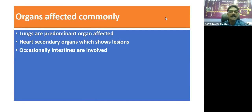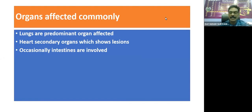While doing post-mortems, most of the lesions are limited to lung and heart. Sometimes, whenever there is a change in form of HS, we can see hemorrhagic type of lesions in the intestines. So basically, lung, heart, and sometimes intestines are involved in hemorrhagic septicemia in case of sheep and goat.